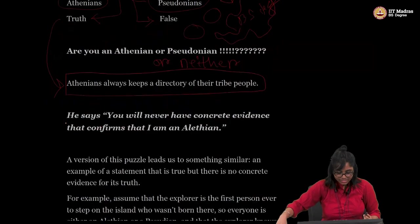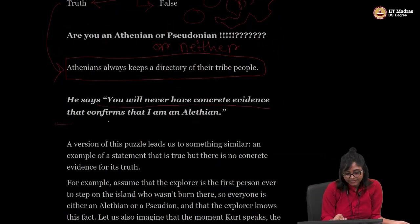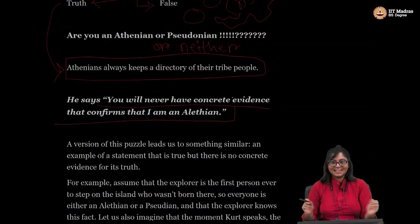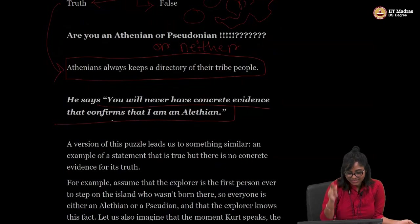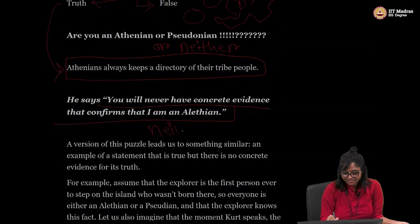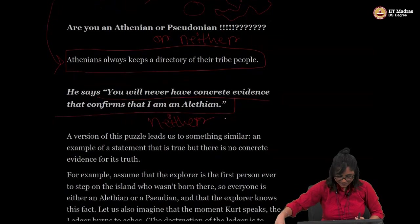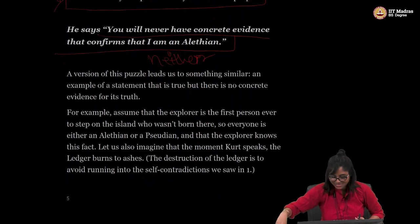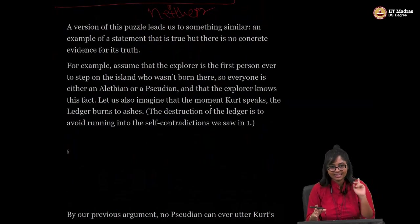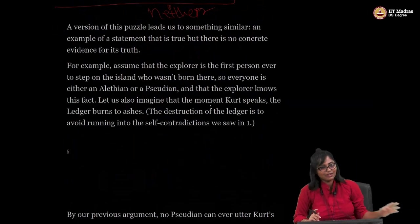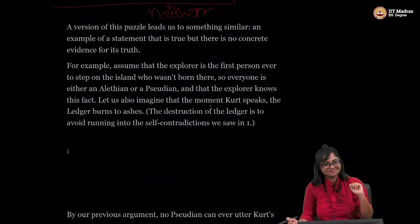He is asking the question. Now, Shuhashistha is answering that you will never have concrete evidence that confirms I am an Athenian. That is his answer. And he got his answer. He suddenly knew that Shuhashistha is neither Athenian nor Pseudonian. He is just an outsider. Now we will see how. And we will see the correlation with Godel's incompleteness theorem. So he says that there is no concrete evidence that I am an Athenian.